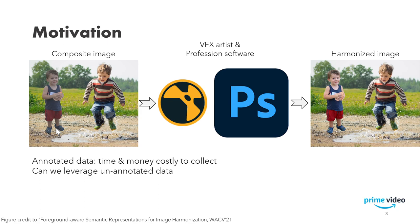It is time and money consuming to collect annotated data for image harmonization, as this often requires the efforts of VFX artists and the use of professional software like Photoshop and Nuke. In this work, we propose a self-supervised pre-training method that is able to leverage large amounts of unannotated data. This allows us to achieve better performance while consuming less annotated data at the same time.